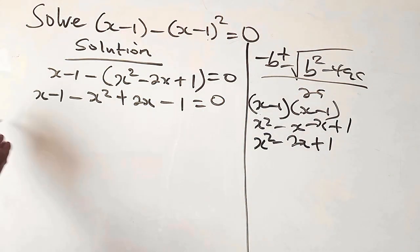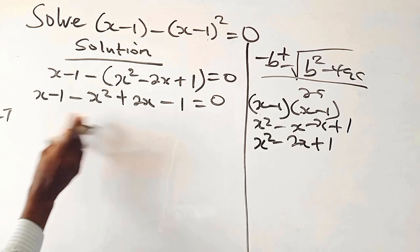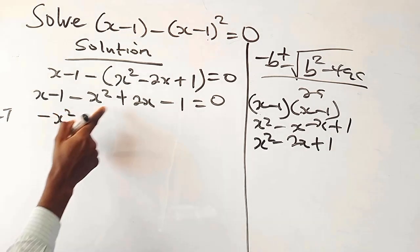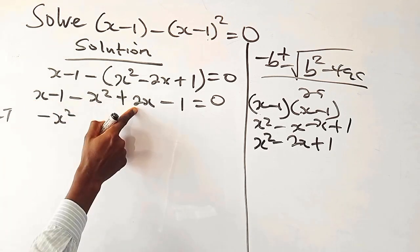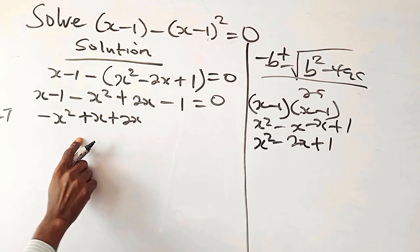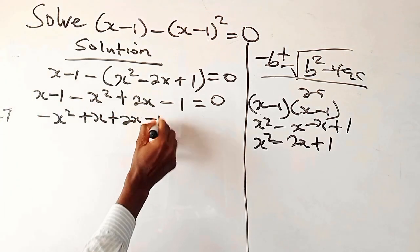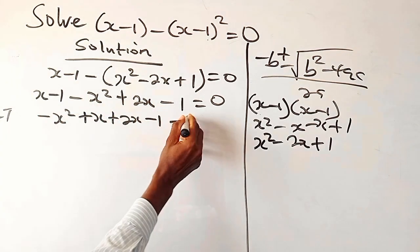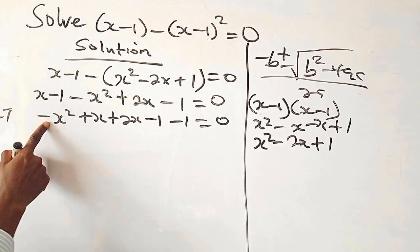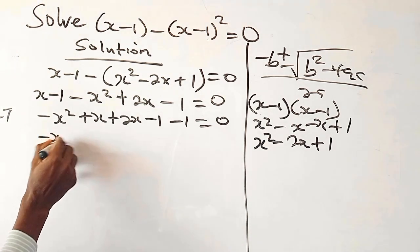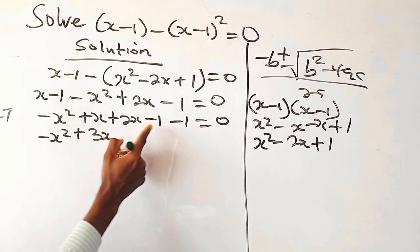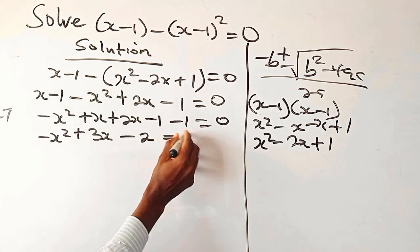Here we collect the like terms. We have minus x squared, then this x plus 2x, and here minus 1 minus 1. So we have minus x squared plus 3x minus 2 equals to 0.